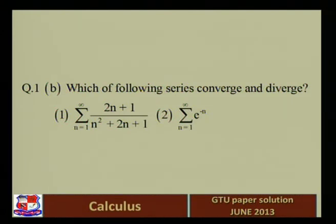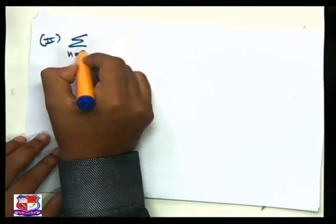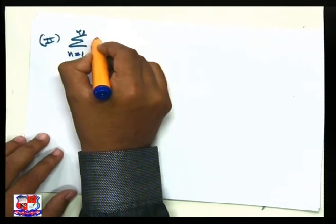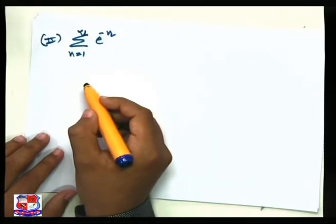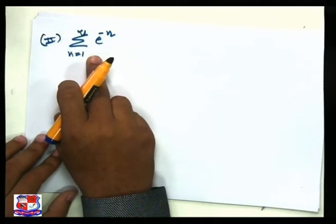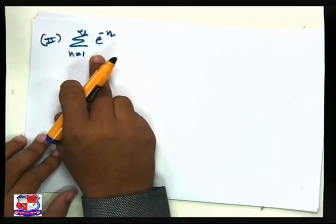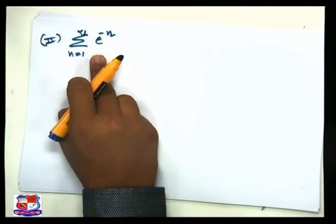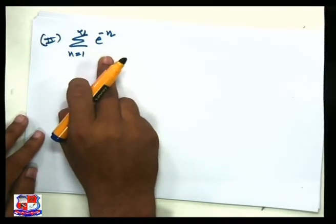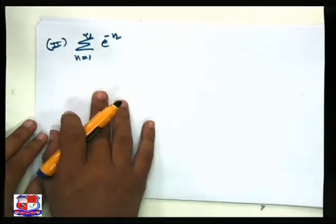The second example is summation e^(−n). To solve this example, we are using the root test. You can also use the ratio test, but using the root test we can easily check whether the given series is convergent or divergent. First, let's understand what the root test is.